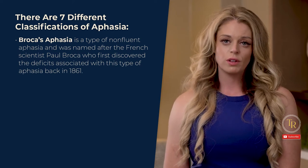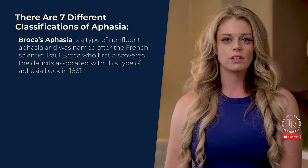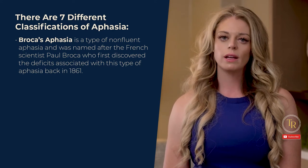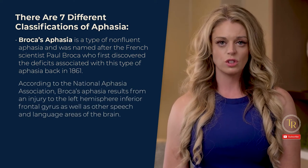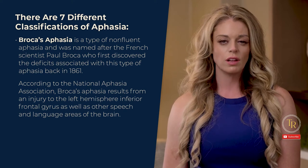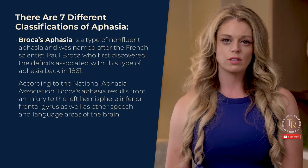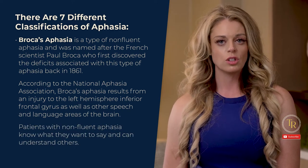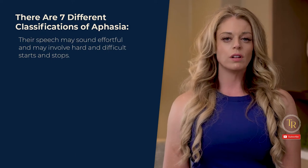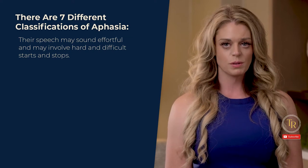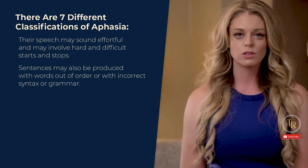Broca's aphasia is a type of non-fluent aphasia, named after the French scientist Paul Broca who first discovered the deficits associated with this type back in 1861. According to the National Aphasia Association, Broca's aphasia results from an injury to the left hemisphere inferior frontal gyrus as well as other speech and language areas of the brain. Patients know what they want to say and can understand others, but their speech may sound effortful with hard starts and stops. Sentences may also be produced with words out of order or with incorrect syntax or grammar.